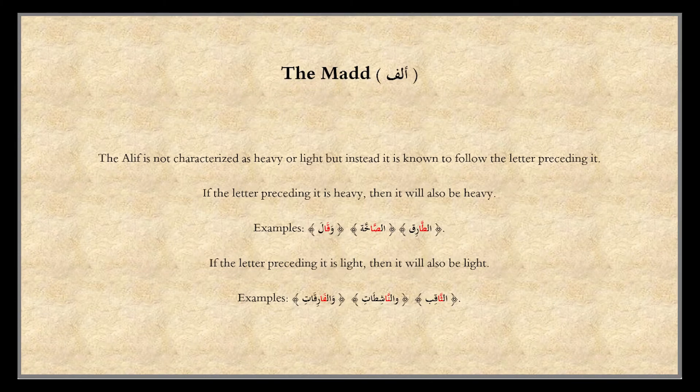We're going to talk in more detail about the second group, starting with the Alif. The Alif is not categorized as heavy or light itself, but it follows the letter before it. If the letter before it is heavy, then it will also be heavy — like Waqala, As-Sah-Khah, At-Tariq. If the letter before it is light, then it will also be light — like Wal-Fariqati, Wal-Nashitati.